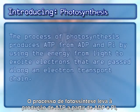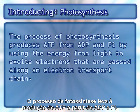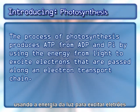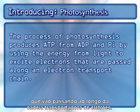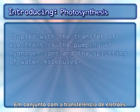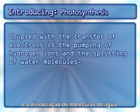The process of photosynthesis produces ATP from ADP and PI by using the energy from light to excite electrons that are passed along an electron transport chain. Coupled with the transfer of electrons is the pumping of hydrogen ions and the splitting of water molecules.